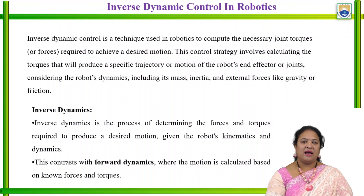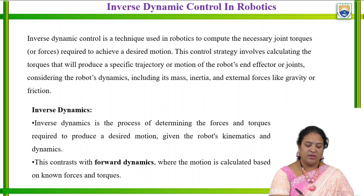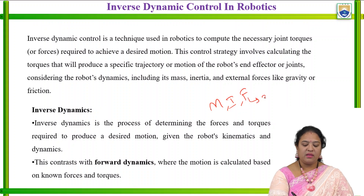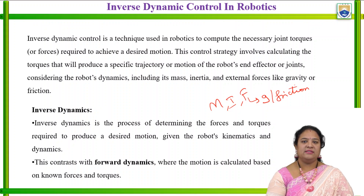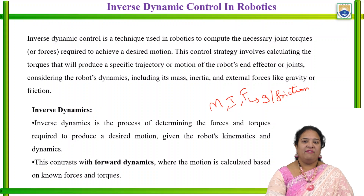This strategy is involved to calculate the torque along a trajectory or motion of the robot's end effector, or we can also consider a joint. When we are considering this particular dynamic control system in robotics, it includes the mass, inertia, and external forces like gravity or friction. Inverse dynamic control is a technique where we calculate the torque and force with the help of the trajectory motion of the end effector or a particular joint manipulator, including mass, inertia, and external forces like gravity or friction.